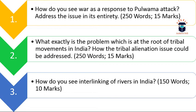The third question is: How do you see the interlinking of rivers in India? There is a lot of talk about interlinking of river projects like the Ken-Betwa project and various other projects. You have to give your opinion on the interlinking of rivers. The word limit is 150 and the maximum marks allotted are 10.